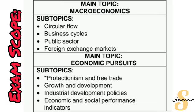In Section B, there is also a third option which is the mix of macroeconomics and economic pursuits. For macroeconomics, we have the circular flow, the business cycle, the public sector, and the foreign exchange market. Note that protectionism and free trade is no longer part of macroeconomics — it is now in economic pursuits. So if you're focusing on macroeconomics for Sections B and C, you are only covering these four topics. My recommendation is that you study everything within these topics, because even though not everything may be asked in Section C depending on what was asked in your preliminary and previous papers, you are still going to be asked questions from those topics in Sections A and B.